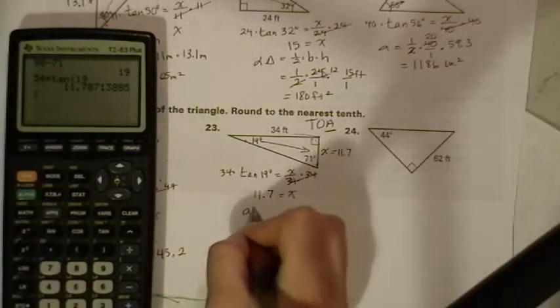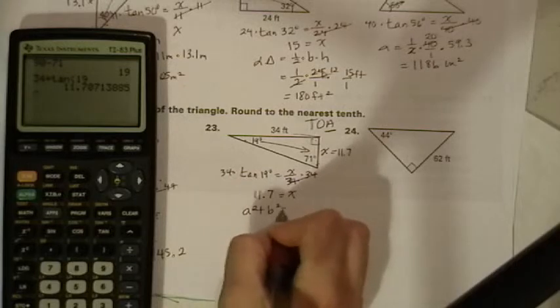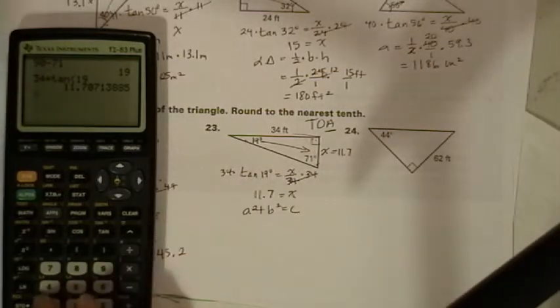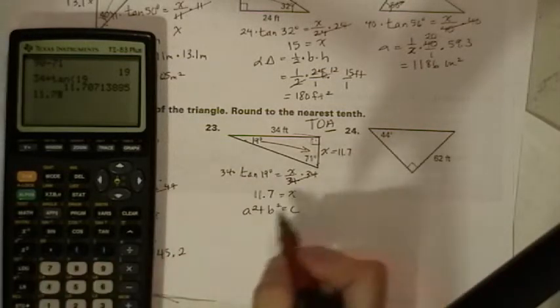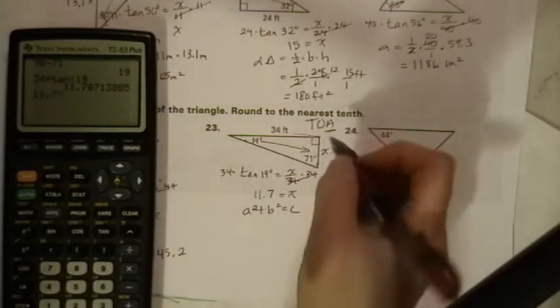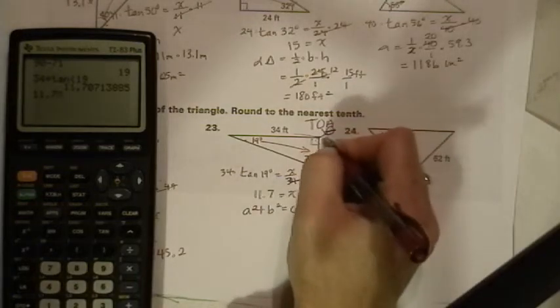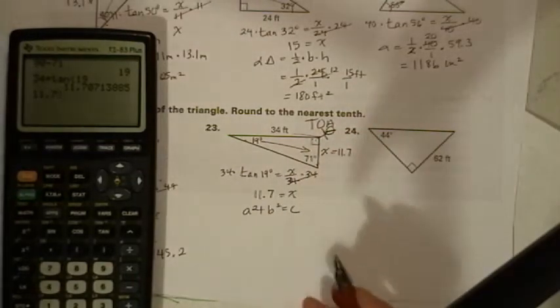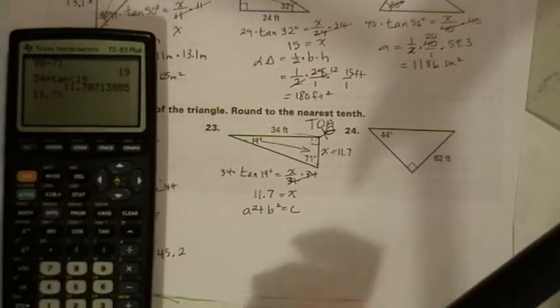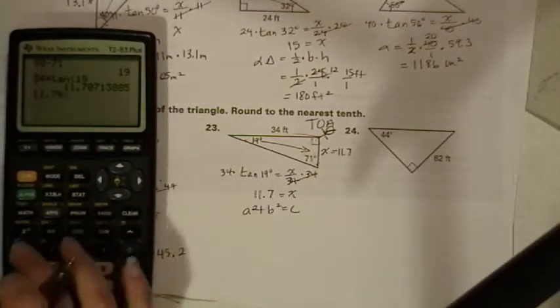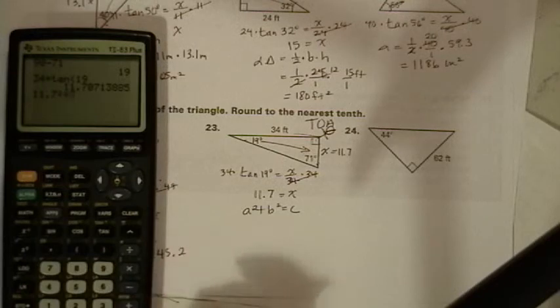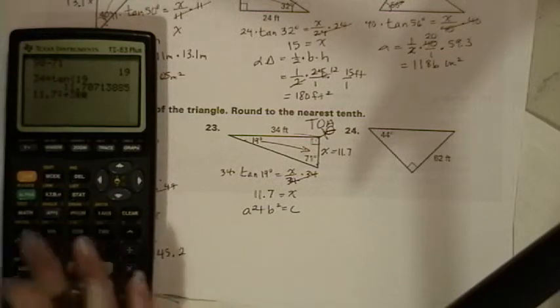Once again, we're going to use the Pythagorean theorem. So we say 11.7, a squared and b squared are the legs. Here's our Tarzan man. Really needs to put more clothes on. 11.7 squared plus 34 squared equals